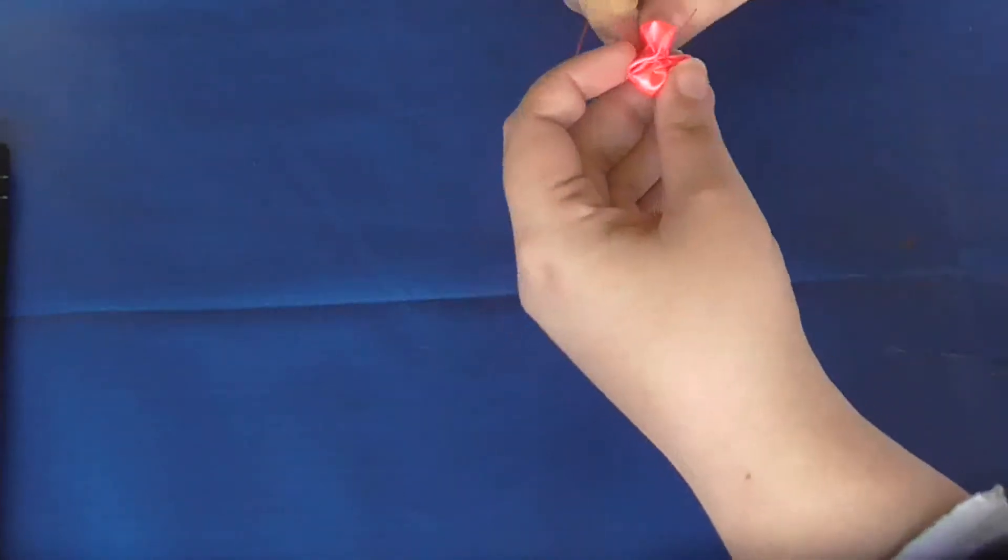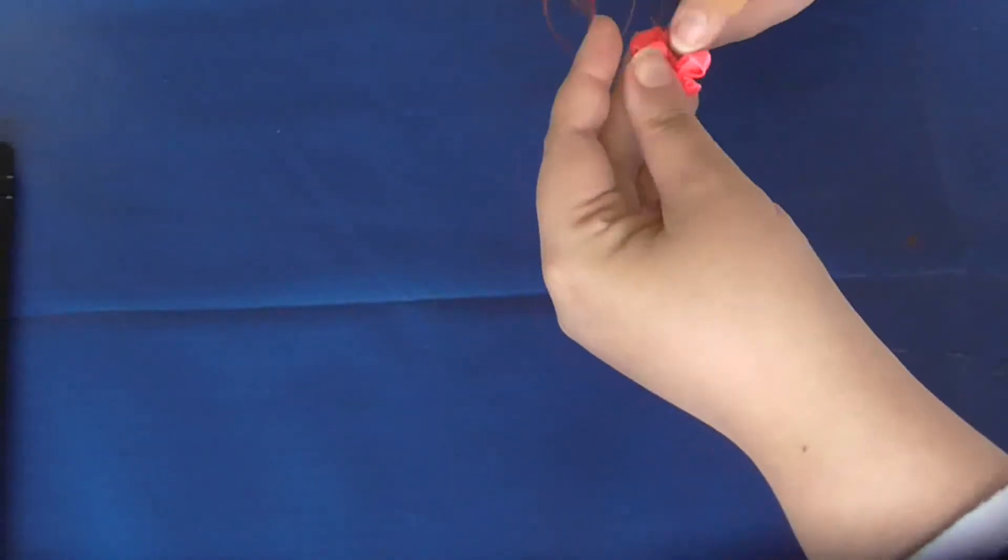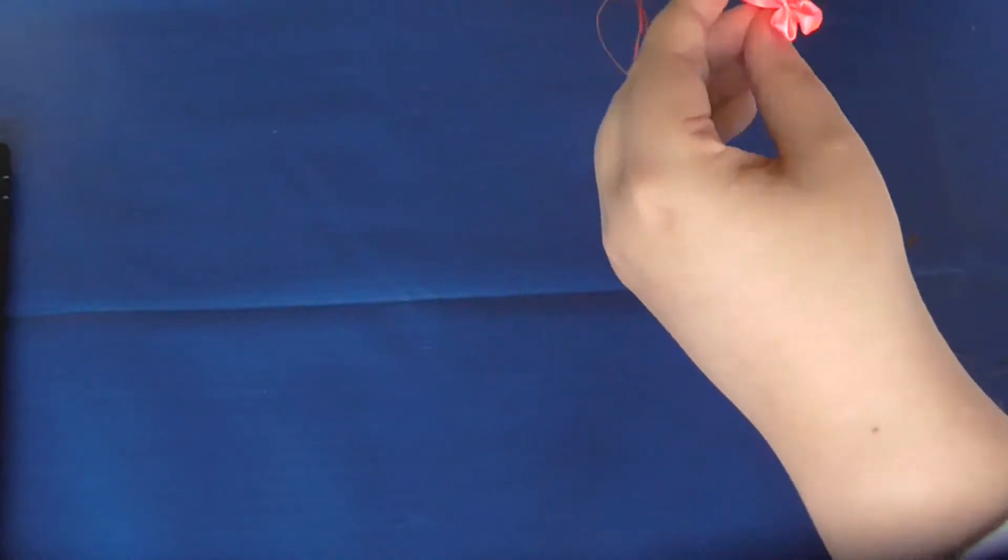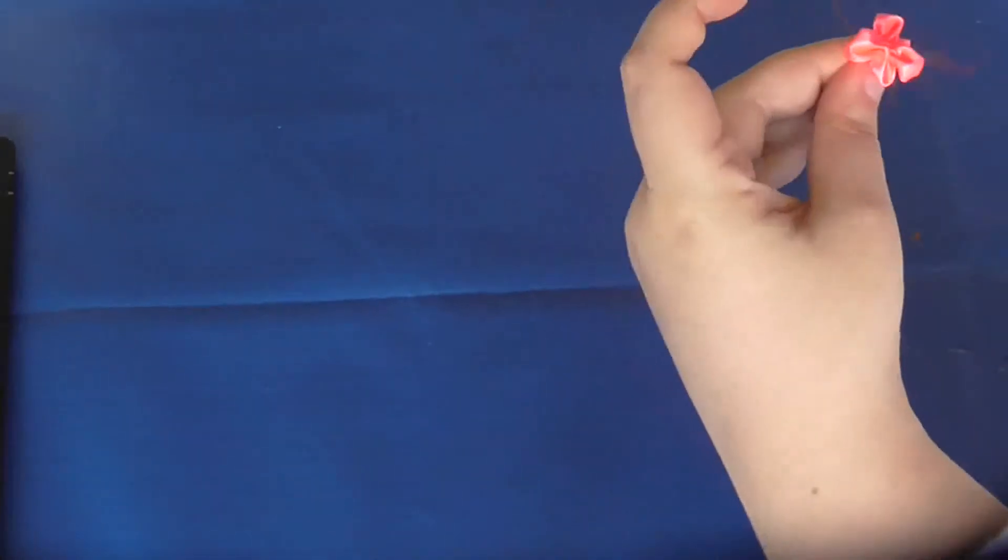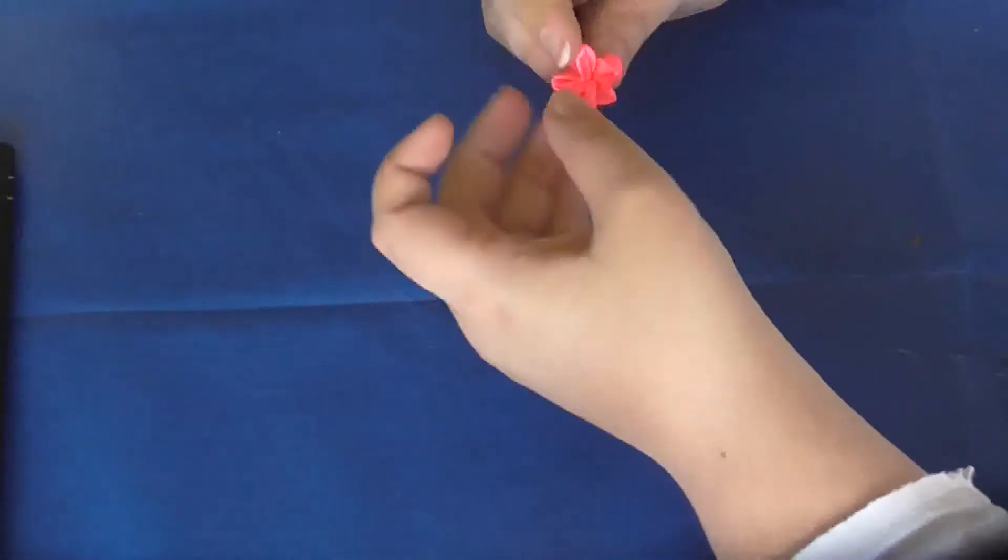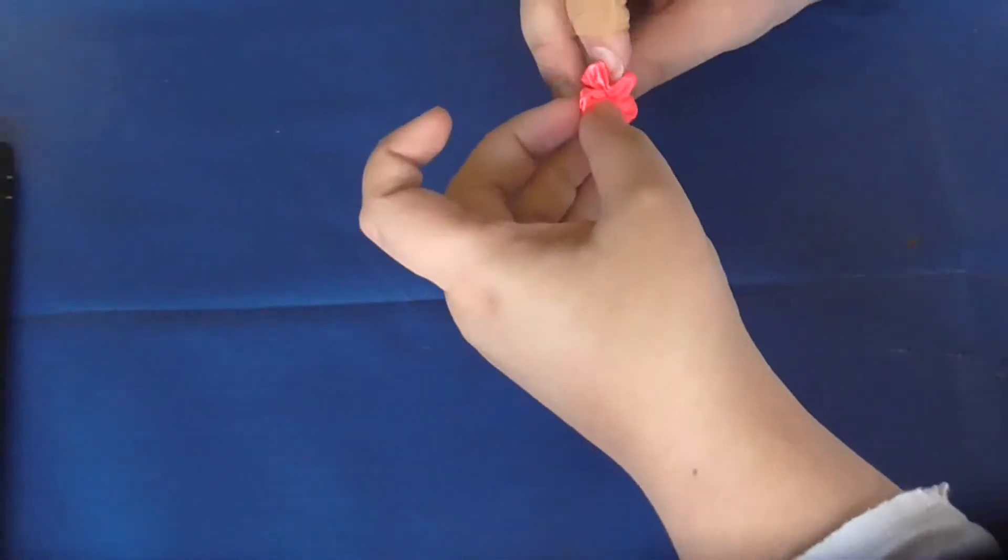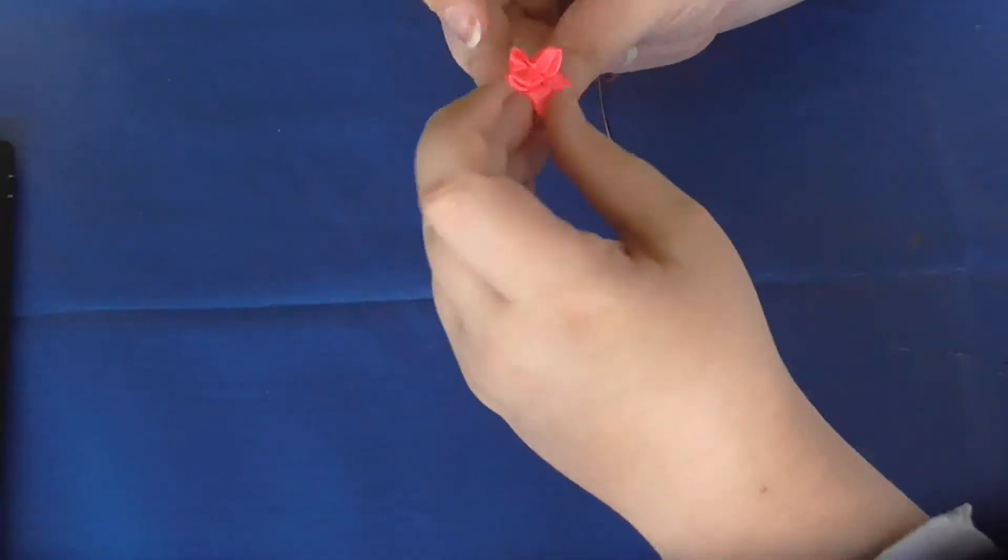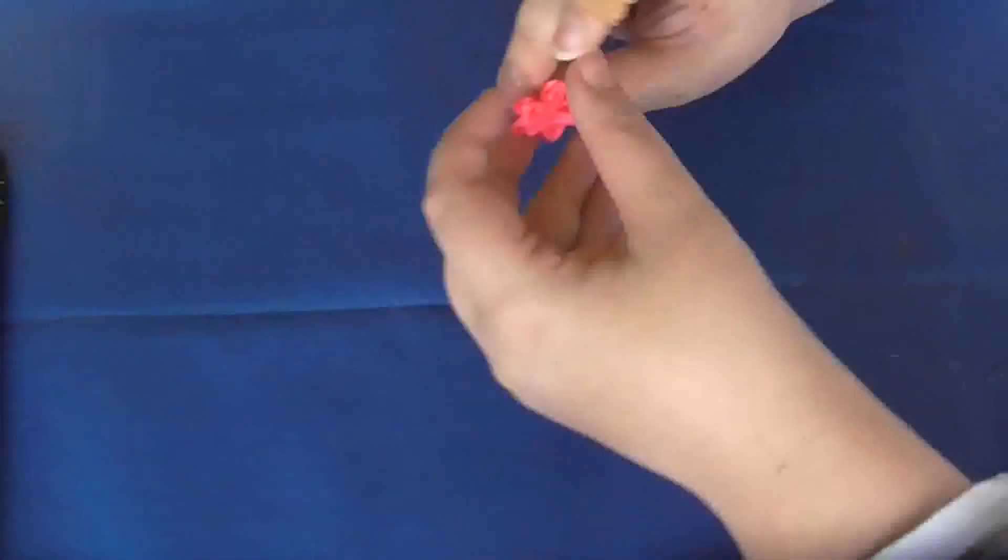Bring your ends together, tuck the raw ends under, and run a stitch through to lock them into place. It takes a little finessing to tidy it up so it all sits neatly into a five-petaled blossom.